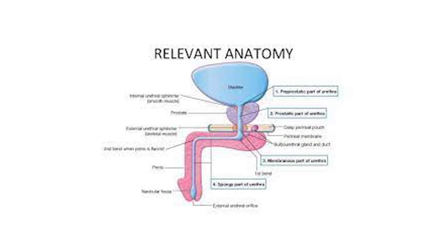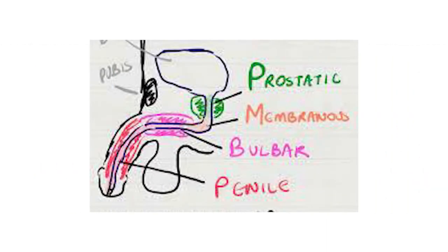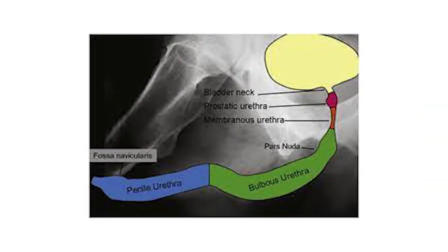On screen you can see a relevant anatomy image of the urethra showing the prostatic urethra, bulbous urethra, and membranous urethra — the anterior and posterior parts. Another image shows the urethral segments: the prostatic, membranous, bulbar, and penile urethra. A third image shows the bladder neck in the prostatic urethra in red, membranous urethra in orange, bulbous urethra in green, and penile urethra in blue.